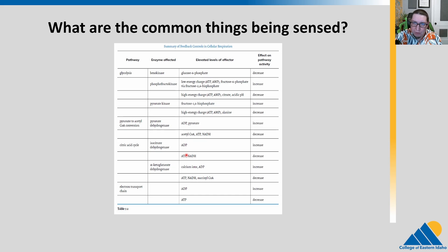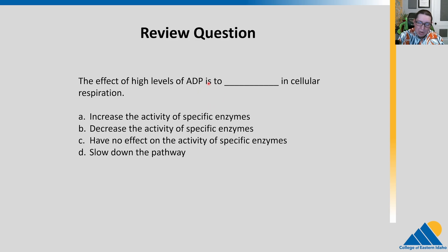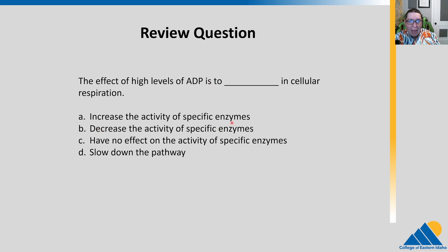Review question: the effect of high levels of ADP is to blank in cellular respiration. ADP is created when you cut a phosphate off ATP — it's lower energy. So if you have high levels of ADP, you have low levels of ATP. That means you need to increase the activity of enzymes in respiration. We want to crank up our ATP generation because we've got a lot of ADP and we need to rebuild ATP stores.